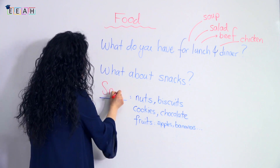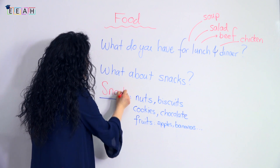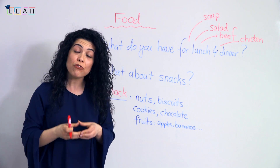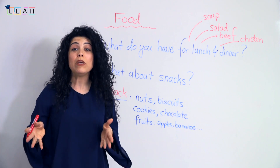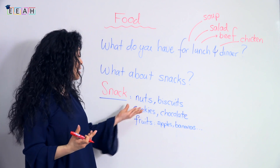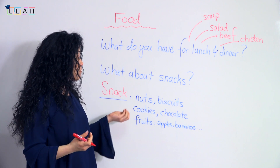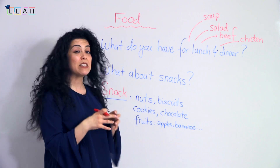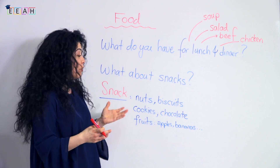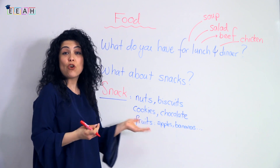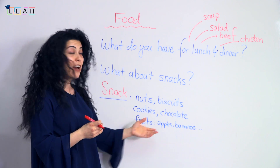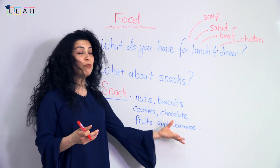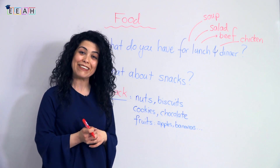A snack is a small amount of food you eat between meals. It could be a handful of nuts, some biscuits, cookies, or chocolate. Or you can have fruits as snacks — apples, bananas, oranges, and many other things.